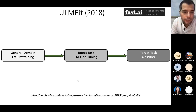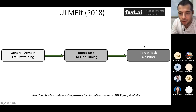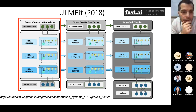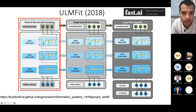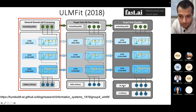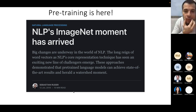ULM-FiT was introduced by the fastai team. It uses the same principle of building a language model pre-trained on a large general-domain corpus, then fine-tuning it on a target task, and finally obtaining a classifier. It's based on a similar architecture to ELMo — multiple layers of LSTMs — extracting embeddings from a deep architecture. The model is pre-trained on a general domain, fine-tuned on a specific domain, and then used in a target classifier.